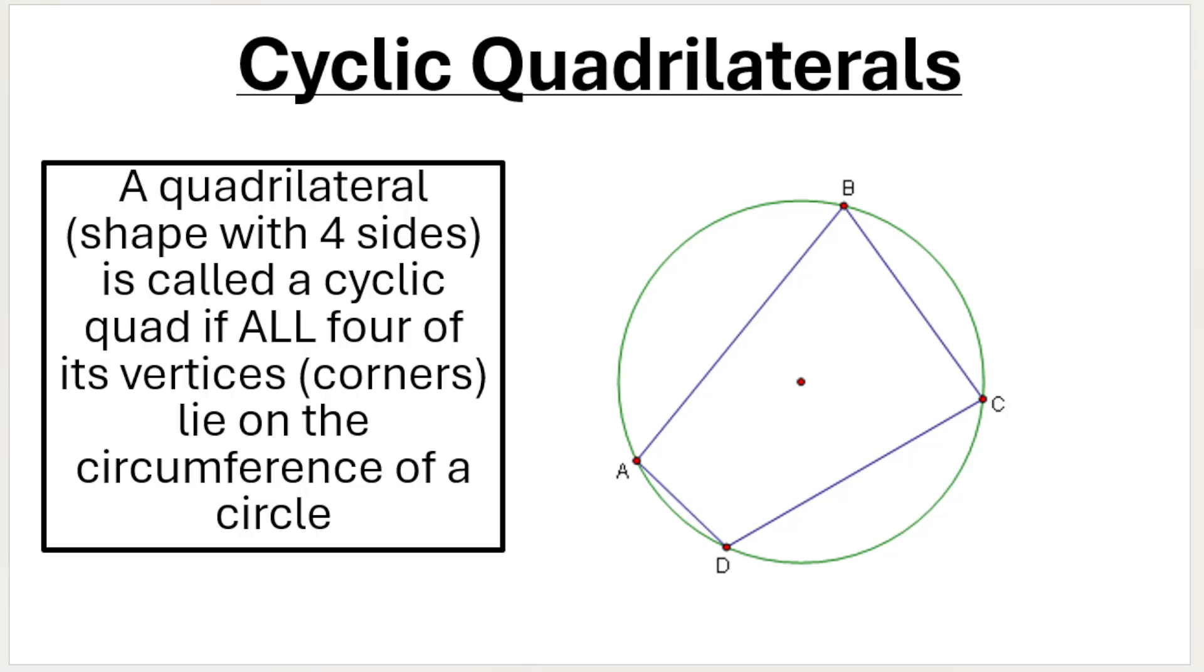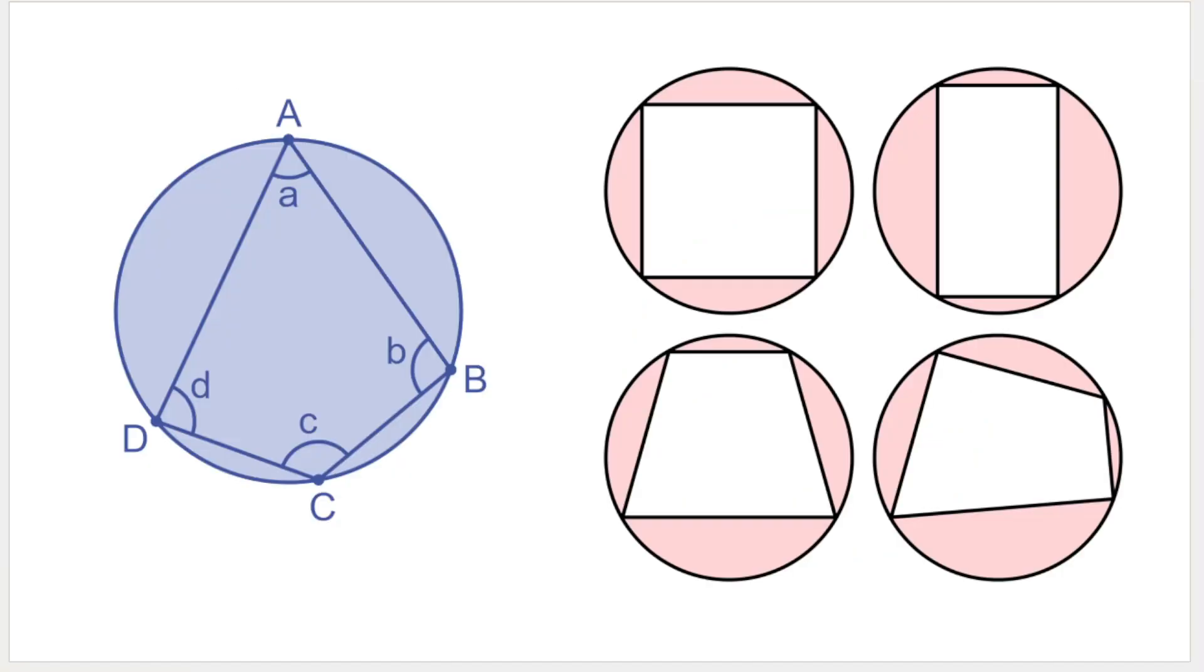So a quad is only a cyclic quad when all four vertices, all four corners, lie on the circumference. Here are some other examples of cyclic quads. They don't always look beautiful. They don't always look pretty. This one here looks very neat, it looks like a square. This one here looks like a rectangle. Remember, I'm saying looks like because we can't just assume that it is. It needs to meet other criteria and display other properties in order for me to be certain. But look at this one, for example, this quadrilateral A, B, C, D. It looks a bit funny, but it's a cyclic quad.